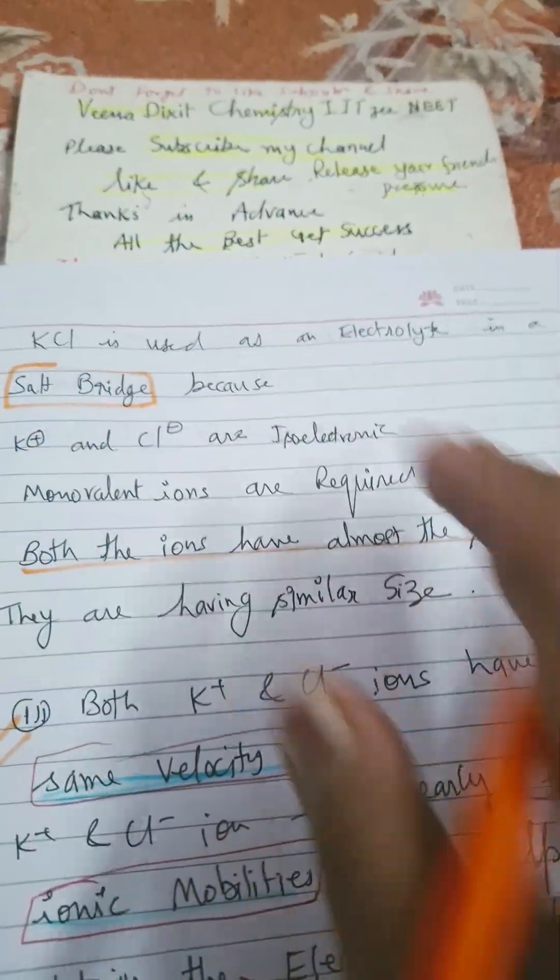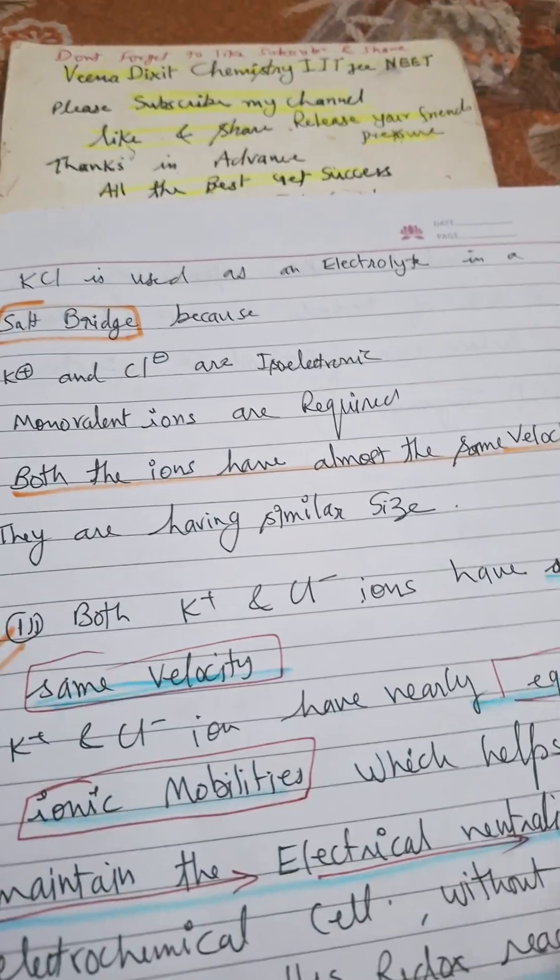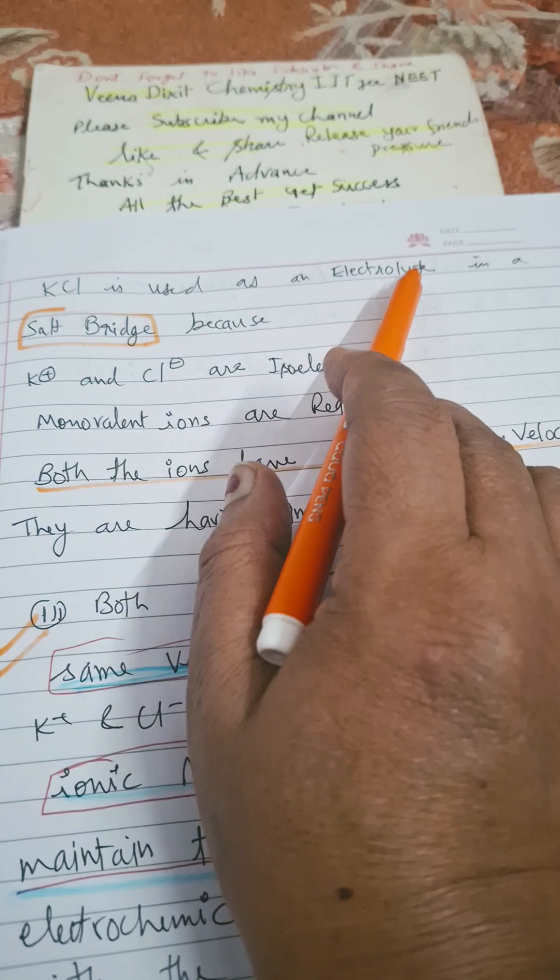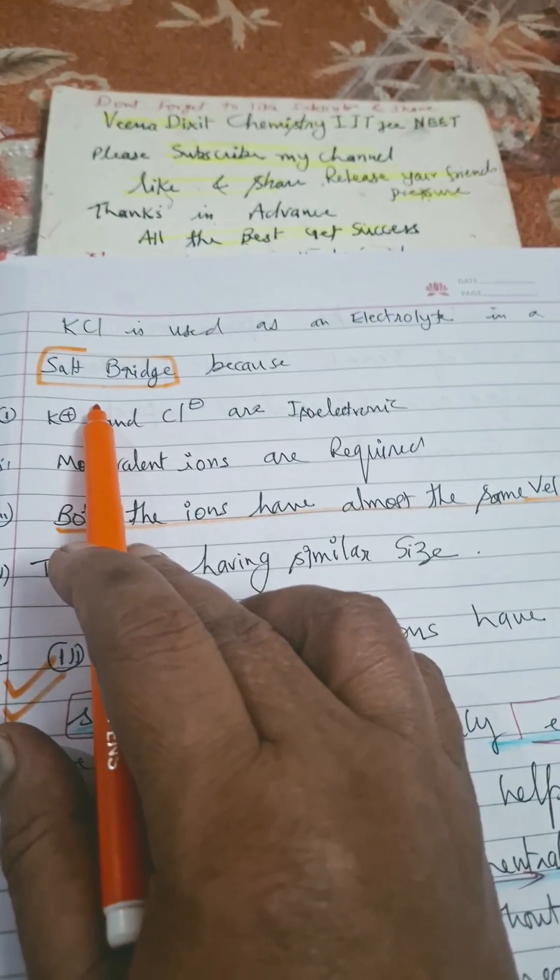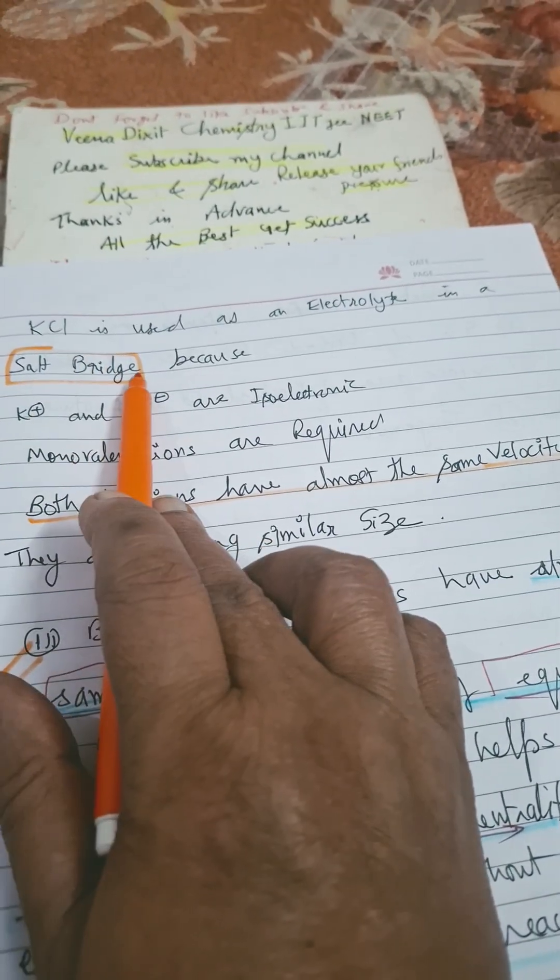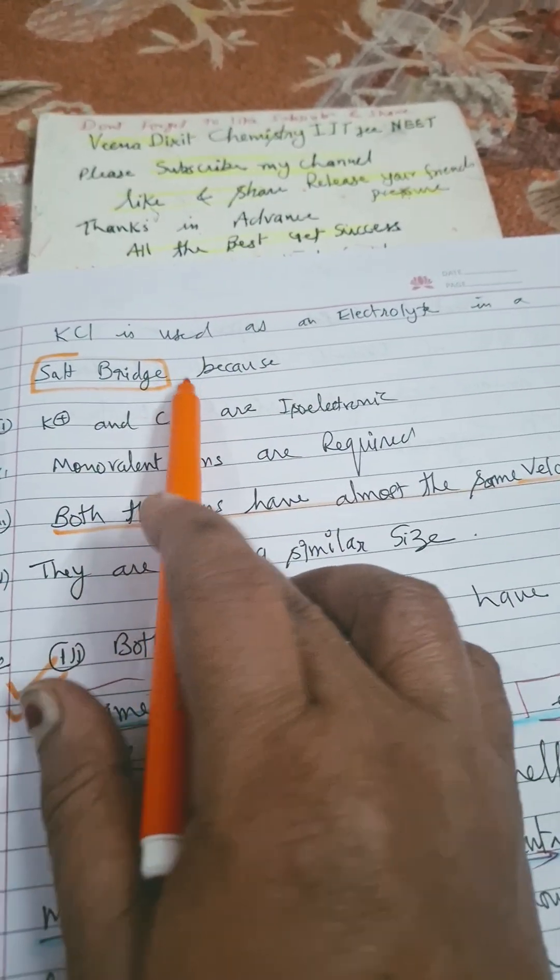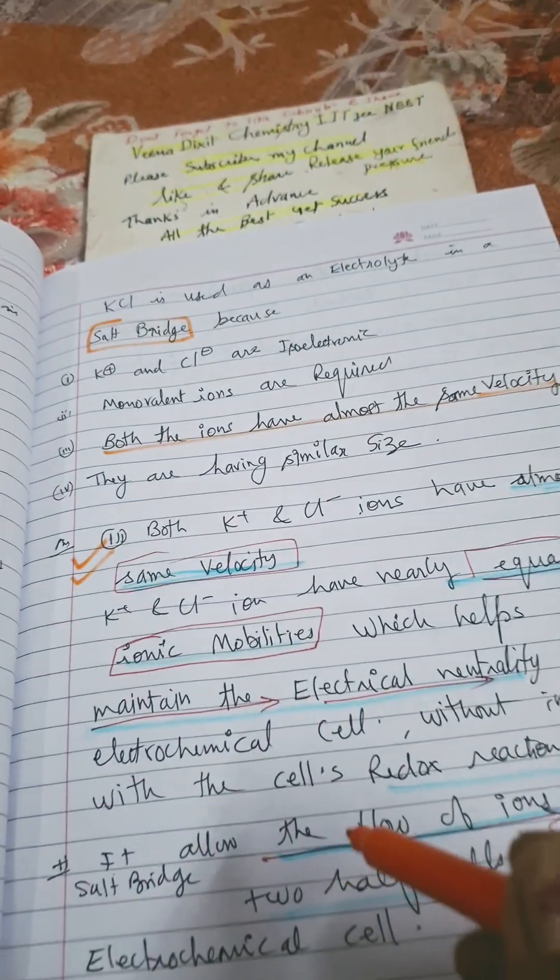Hello students, don't forget to subscribe to my channel. All the best, God bless you. KCl is used as an electrolyte in a salt bridge. Do you know what is a salt bridge? Where are we using it? We are using it in electrochemical cells.